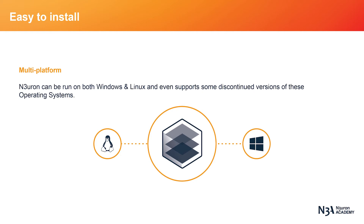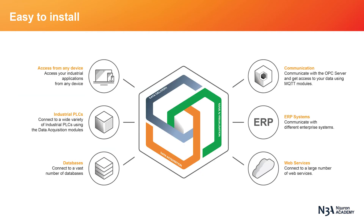As a web-based software solution, you can access and configure Neuron from any device. Neuron's core functionalities lie in its fully integrated software modules, which allow it to function as a communication hub. Its OPC UA, DA, and XML client modules allow you to communicate with virtually any OPC server, making it possible to communicate with almost any PLC available on the market. Additionally, Neuron's OPC UA server module enables data exchanges with any other third-party OPC UA client. Neuron also includes the MQTT client module, allowing users to connect the platform to any MQTT brokers for fast and efficient data access.